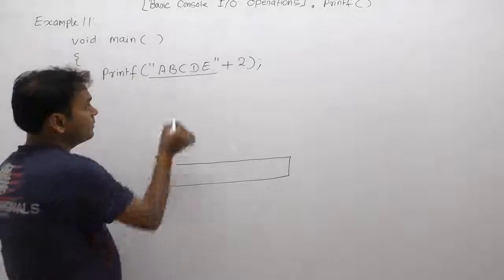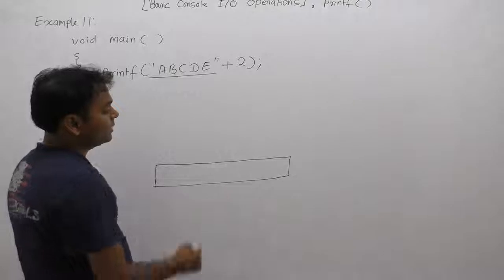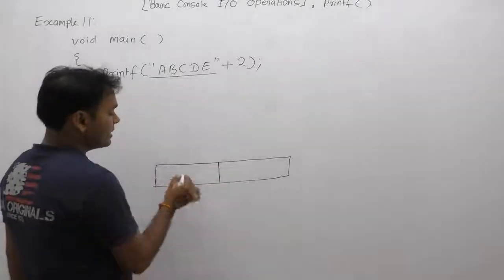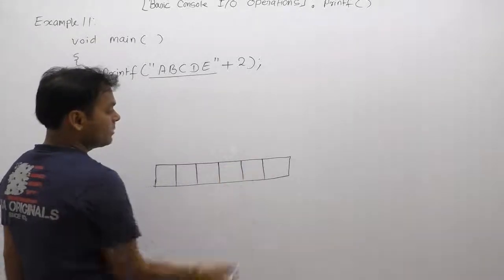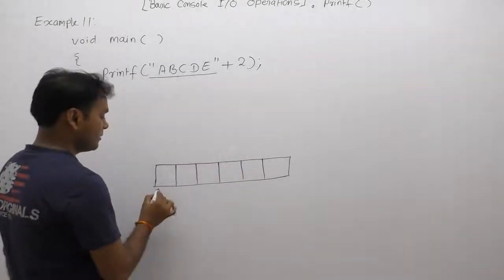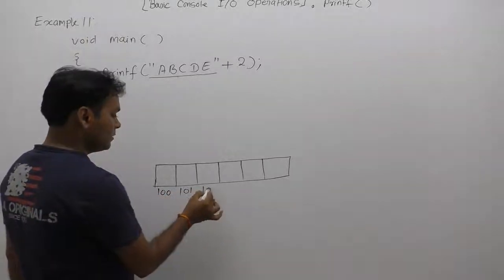First of all, when creating memory or storing this string inside memory, here we are finding five characters, but the string will take one extra character as null. Therefore, the final size is six bytes. Some beginning addresses may be 100, 101, 102, 103, 104, and 105.